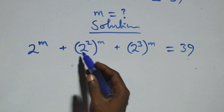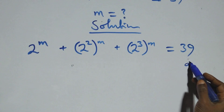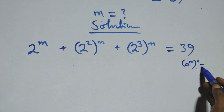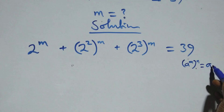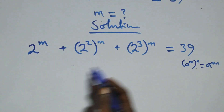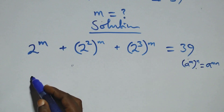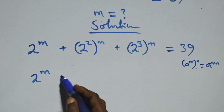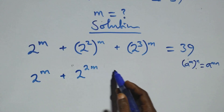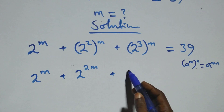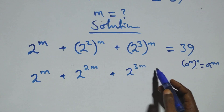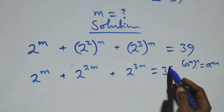And here this follows: when we have a raised to power m raised to power n, we can write this as a raised to power m·n. So this power multiplies, and we have 2 raised to power m, plus 2 raised to power 2n, then plus also here we have 2 raised to power 3n, equals to 39 on this side.